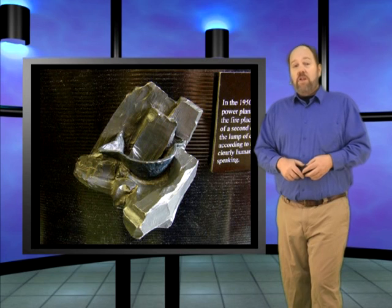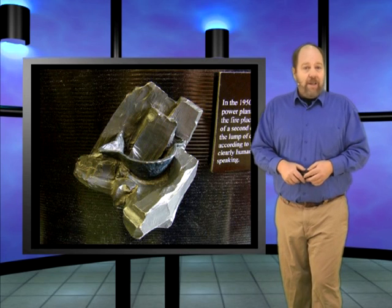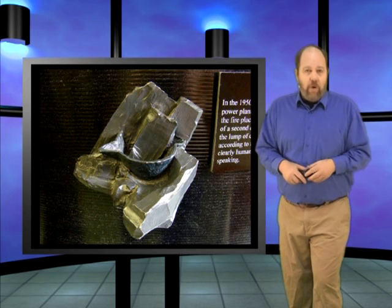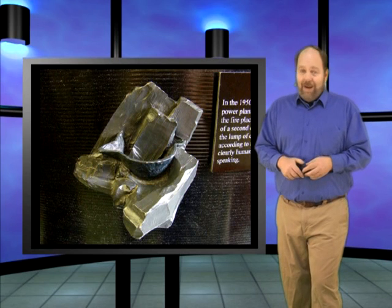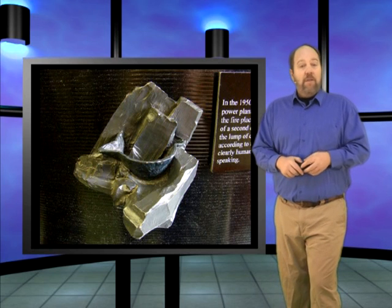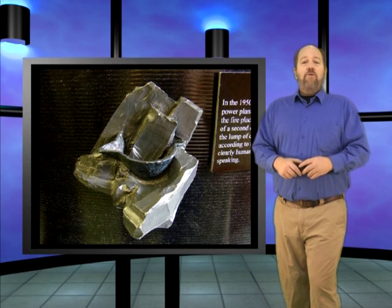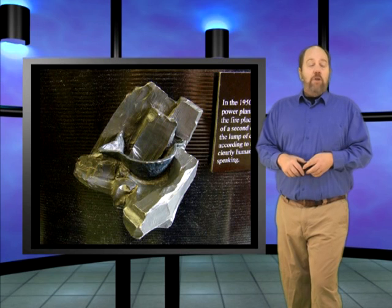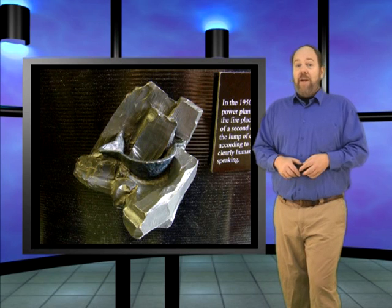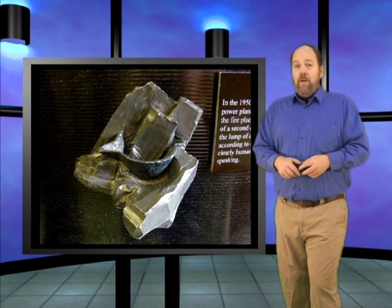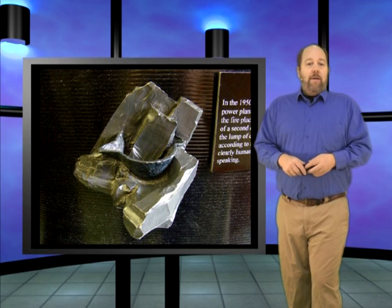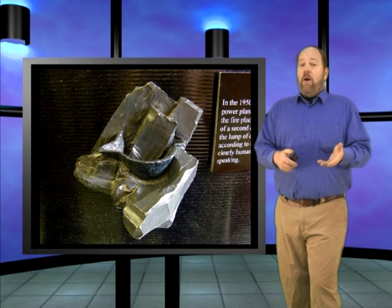Frank Kennard was working at the Municipal Electric Plant in Thomas, Oklahoma in 1912. While working with coal for the coal-fired plant, he had a lump of coal too large for the furnace, so he hit it with a sledgehammer. In front of a second eyewitness, they watched in amazement as an iron pot fell out of the middle of the lump of coal. Kennard traced the coal back to the Wilburton coal mines of Oklahoma, dated by the US Geological Survey as 295 million years old — before the time of the dinosaurs. So we have evidence that man has been around since the beginning of time, even using the evolutionary timescale.